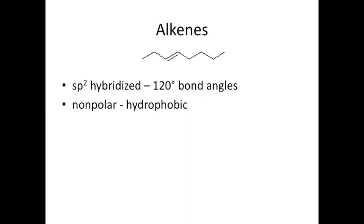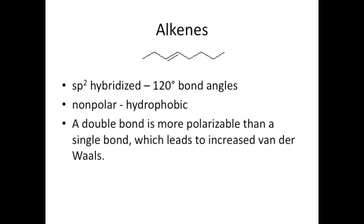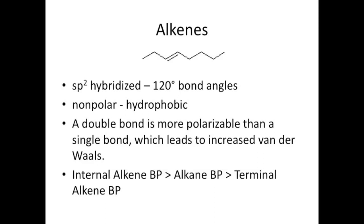Next up we have alkenes, which have a carbon-carbon double bond and are sp2 hybridized, meaning everything immediately around the double bond is planar. Just like alkanes, they are nonpolar, and as molecular weight increases, so do boiling point, melting point, and density. They experience the same effects due to branching as well. The biggest difference is that the double bond is more polarizable than a single bond, and is therefore subject to increased van der Waals. This means that when comparing alkanes to alkenes of the same chain length, the alkene will have higher boiling point, density, etc. There are exceptions — terminal alkenes have lower boiling points than alkanes of the same length, but internal alkenes do have higher ones. Focus on the big picture: alkenes experience greater van der Waals forces than alkanes.